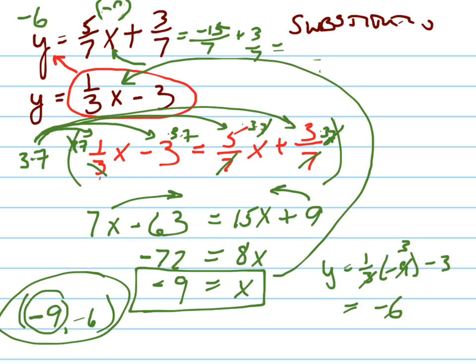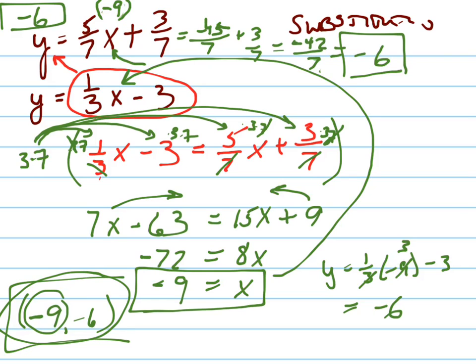Negative 9 times 5 is negative 45. Negative 45 plus 3 is negative 42. Negative 42 over 7 is equal to negative 6. And that checks out — that's what it should have been. So this is, in fact, the correct answer.